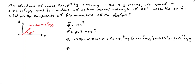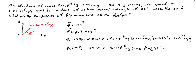Then we find p_y, which is mass times v sine of theta. So it is equal to 9.1 times 10 to the negative 31 kilograms times 2.0 times 10 to the fifth meters per second times sine of 25 degrees. So p_y would be equal to 7.7 times 10 to the negative 25 kilograms meters per second.